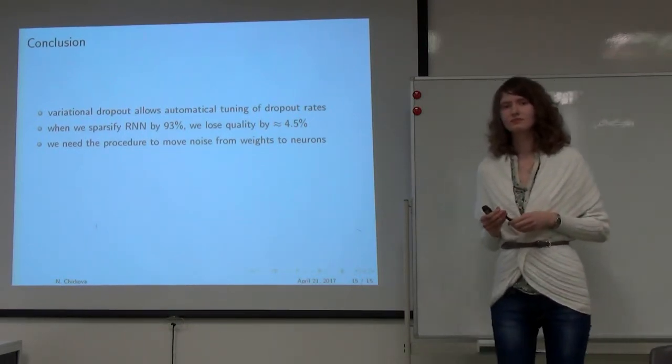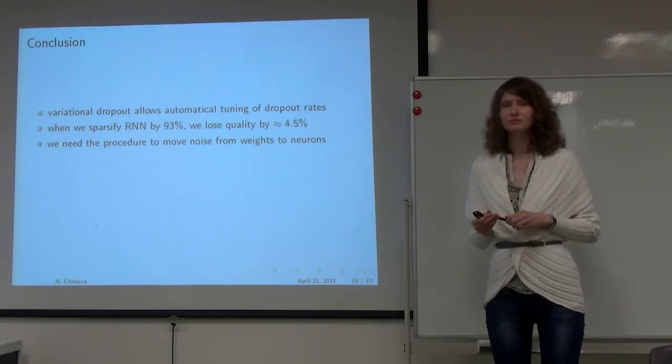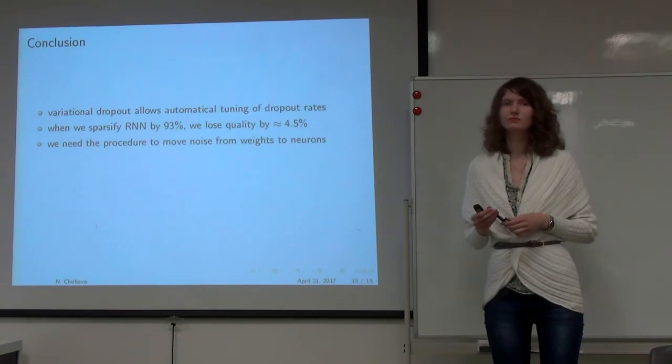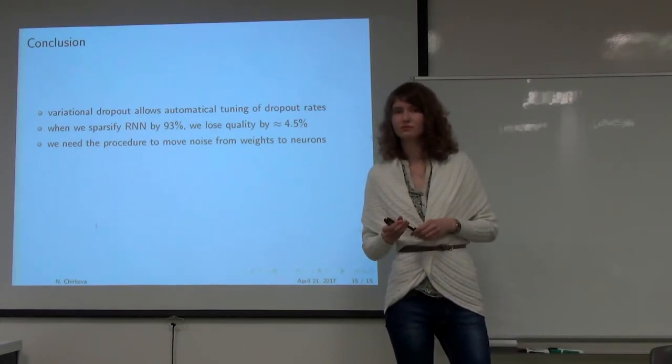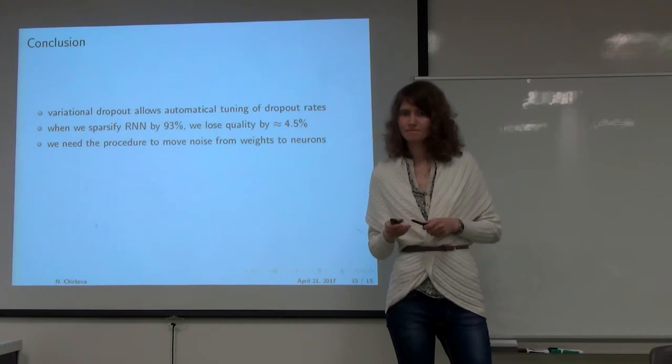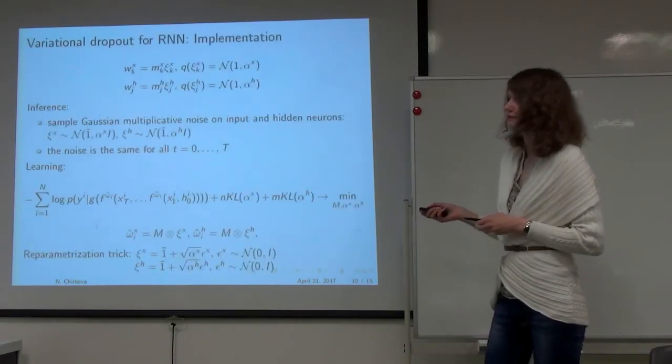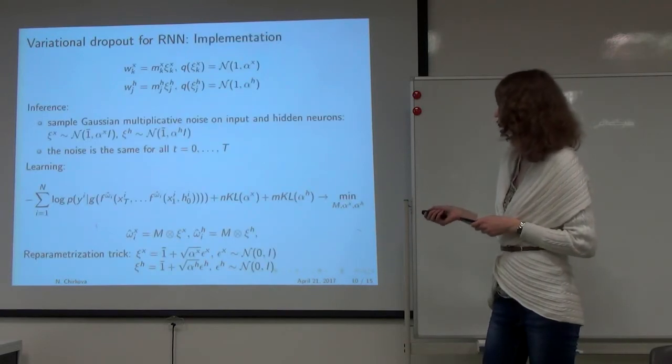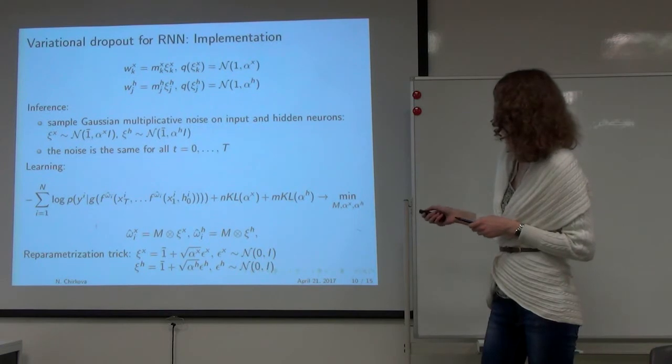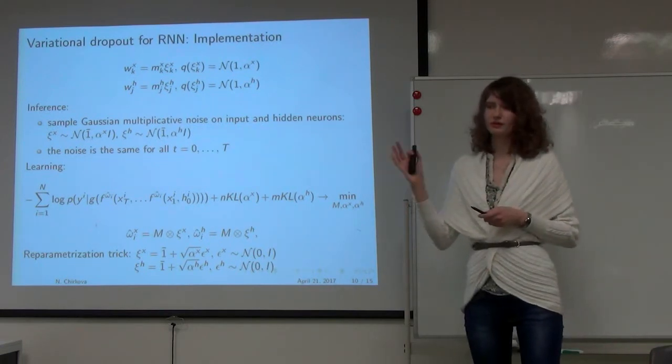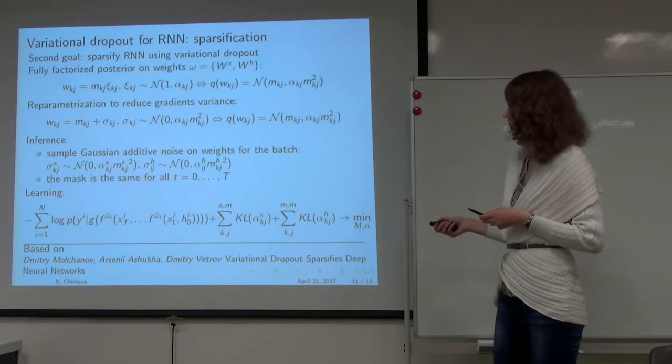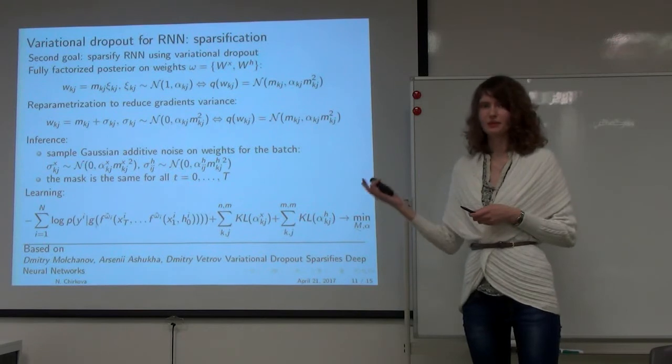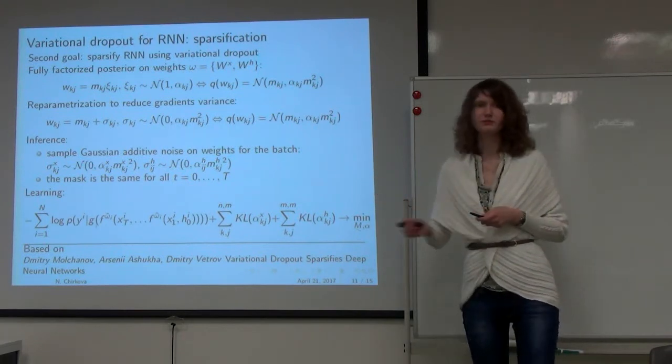A question on sampling: as I understand, you use random weight with mean zero? How often do you sample - for each sample, for minibatch, or for the whole training set? With the second model with just two dropout rates, we sample for each object because we put noise on input, which is not expensive. When we try to sparsify RNN, we have to put noise on weights, which is expensive, so we put it on the batch, not on a separate object in the batch.